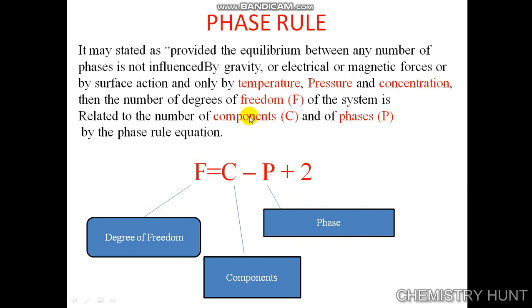So it is not influenced by gravity, electrical or magnetic force, but by temperature, pressure and concentration. Hence, F = C − P + 2, where F is degree of freedom, C is components, and P is the phase.